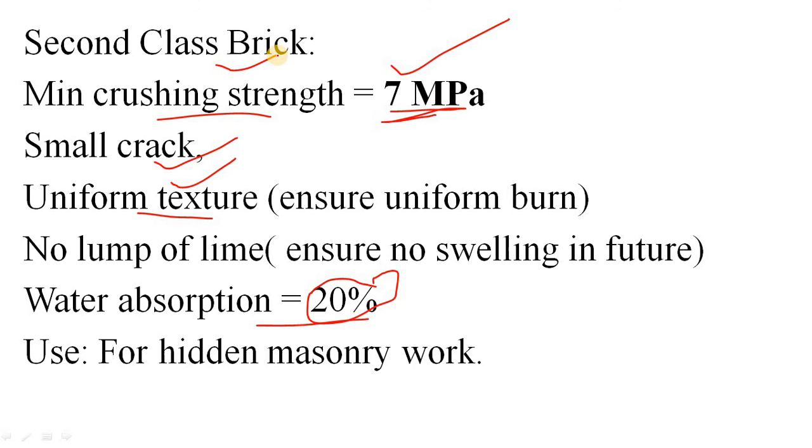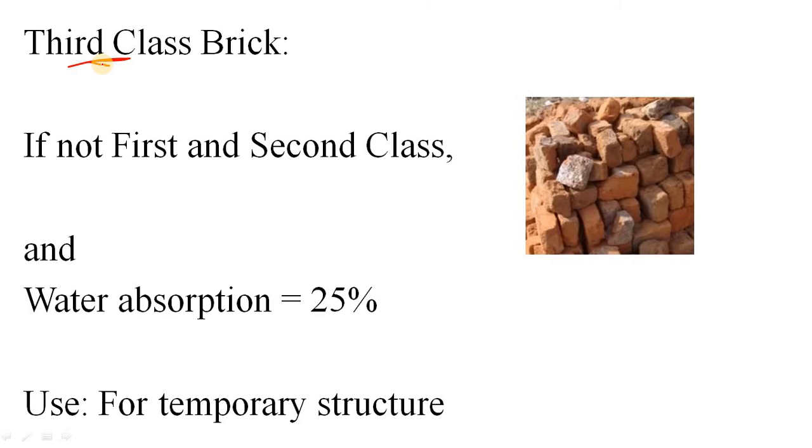As you can see, the water absorption is maximum. For first class brick it was 15%, for second class it was 20%, but in third class it is 25%. So water absorption in brick indicates a lot - its strength, its durability, everything. This is third class brick, and normally it looks like this. For any temporary structure, we can use third class brick.